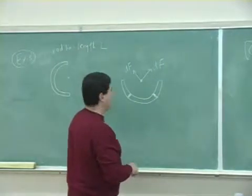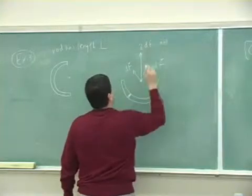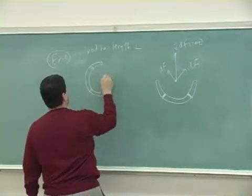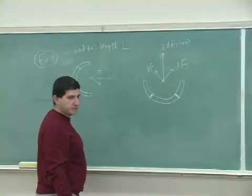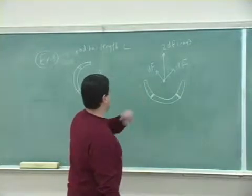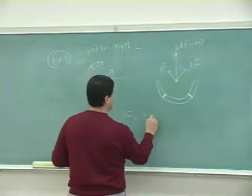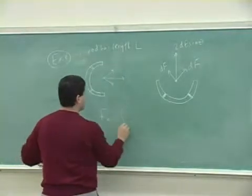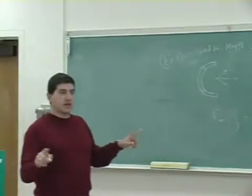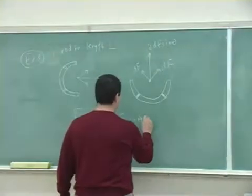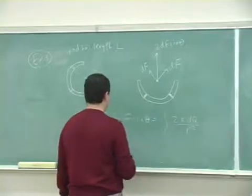Only the y-component of the force survives by symmetry. If the semicircle were oriented differently, only the x-component would survive, but the formula is still the same. So we can write: F = integral of 2·dF·sinθ, which is very similar to how we set up the linear flat rod. Here, dF = k·dq/r²·sinθ.